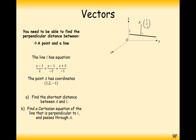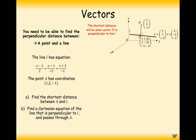Here we have our diagram again. A is this point here: 1, 2, minus 1. The line is this line here. We've changed the Cartesian form into vector form. The point P here is the point that will provide the shortest distance, and it will be somewhere along this line. So it must have the coordinate 1 plus 2λ, 1 minus 2λ, and minus 3 minus λ for a certain value of lambda. We've created this coordinate P from the equation of the line.